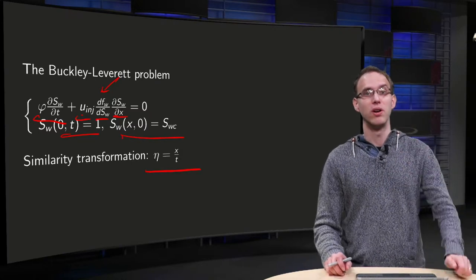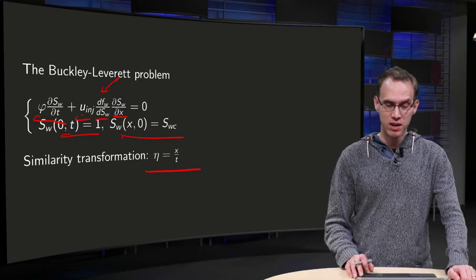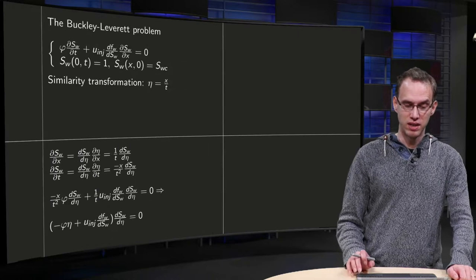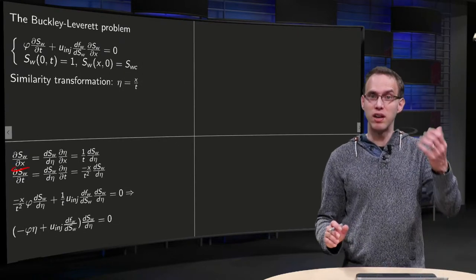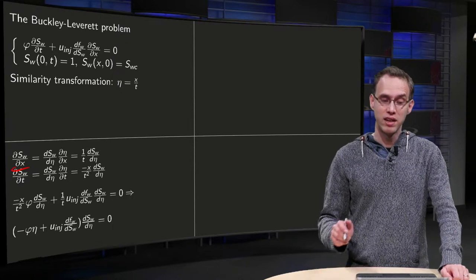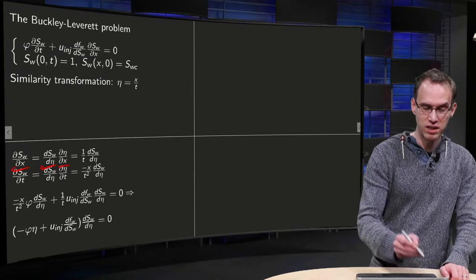So that means if we take the derivative ∂Sw/∂x, we see Sw as a function of η. That becomes ∂Sw/∂η times ∂η/∂x.